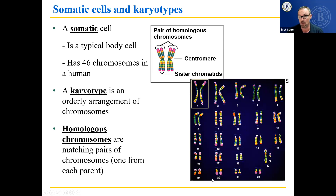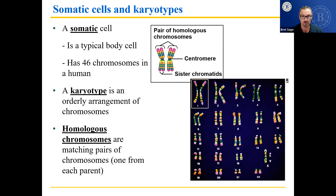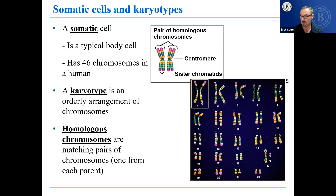This is a man's karyotype. How do I know? If you look here at X and Y — the presence of the Y converts a typical, normal human, which is female, into male. So interestingly, males are modified females, because in the absence of Y, everybody's female. The Y has to be there to turn on genes to turn the baby into a boy.